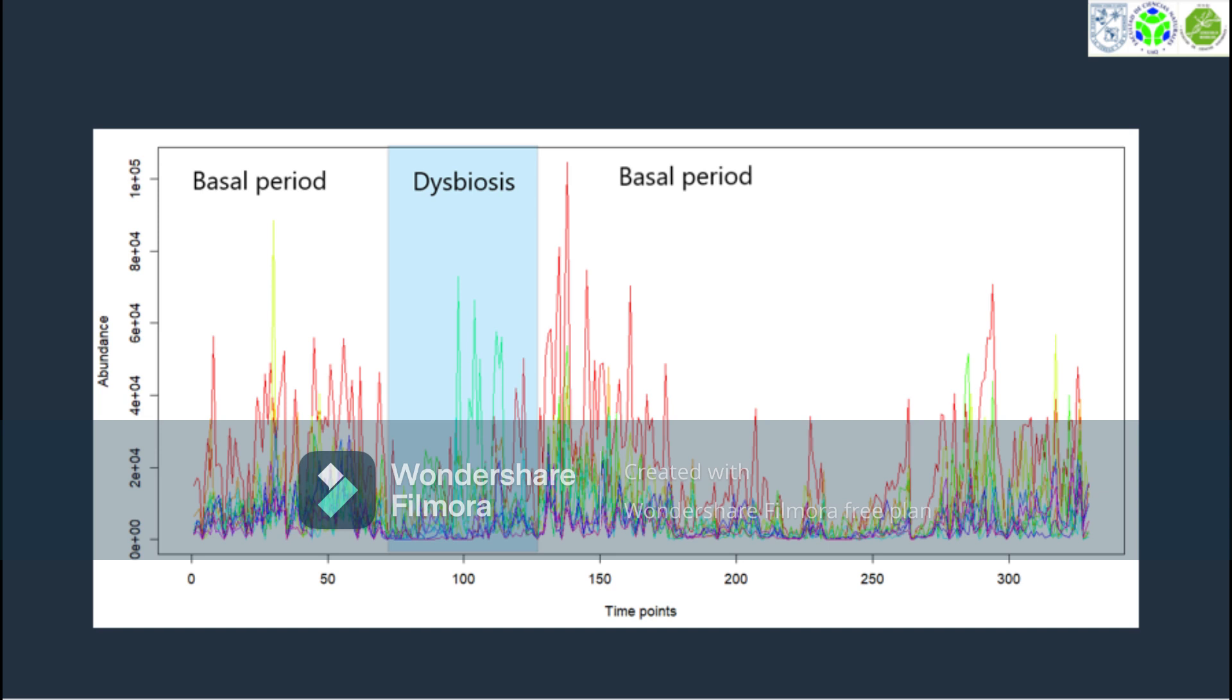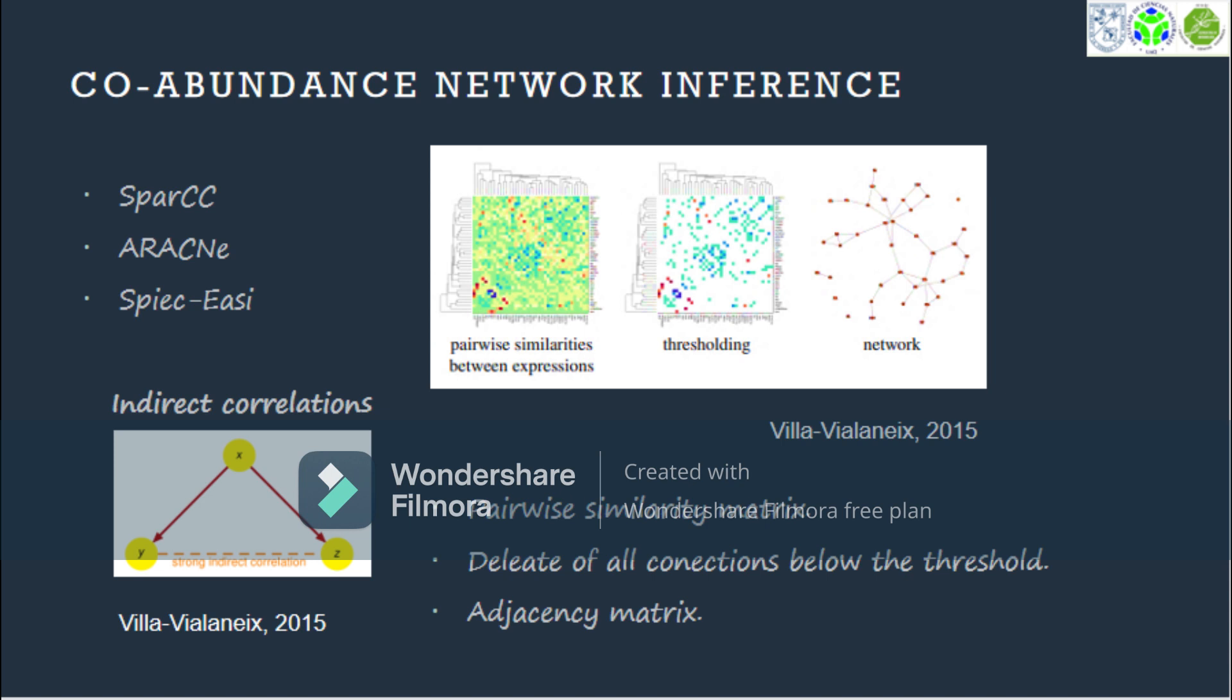The data corresponding to the periods of sickness was separated from the baseline periods, during which the patients did not present a clinical picture. Different inference algorithms were used to build co-abundance networks that would allow us to recognize possible correlations between the populations of bacterial genera found in the samples throughout the period in which they were collected.